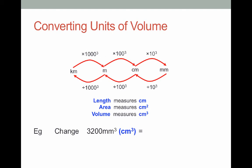We're going to change three thousand two hundred millimeters cubed into centimeters cubed. So I'm going to start by looking at my diagram and noticing that I'm going from millimeters into centimeters, and if I was to follow this arrow I would see that I would be dividing by 10 cubed or dividing by a thousand.